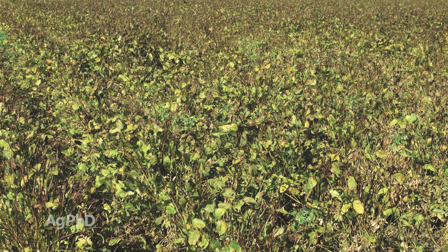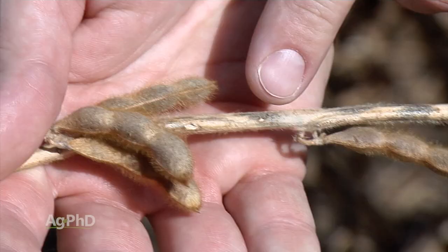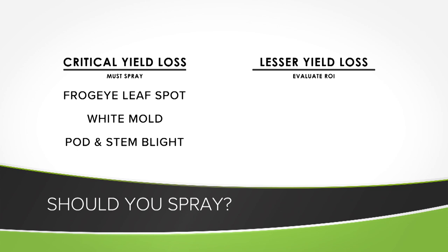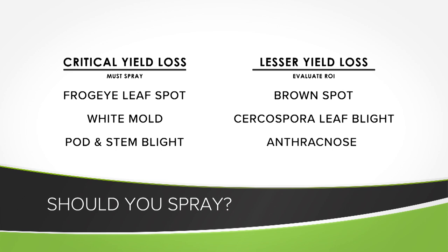Even if you're not raising soybeans for seed, Cercospora is one you'll want to stop, and fungicide can be very helpful. Anthracnose is another late season disease, often like pod and stem blight — you'll see it later on. Of these diseases — frogeye, white mold, and probably pod and stem blight — no matter what your yield is, all of those could really, really hurt you. You've got to spray. With brown spot, Cercospora, and Anthracnose, if you're down in the 30 to 40 bushel range, it may not be worth spraying. But if you're pushing for 60, 70, or 80 bushels plus, then it's going to be worth treating.